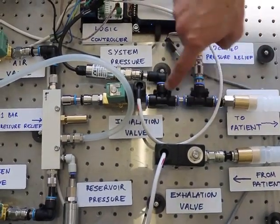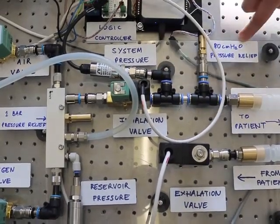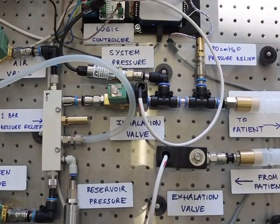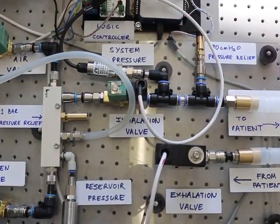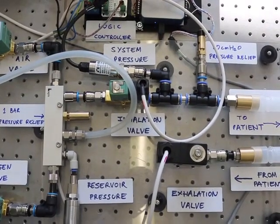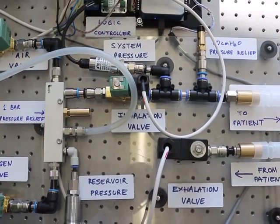So just downstream of where this second pressure sensor is, we have another pressure relief valve. This one's a lower pressure, it's 80 centimeters of water. So that protects the patient in case anything goes wrong and the pressure goes too high here, there's no way it can exceed this number. And that will protect harm from the patient. We then have this connector that goes off via the ventilation tubing to the patient.